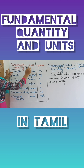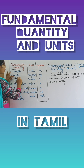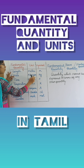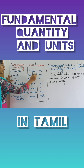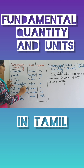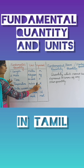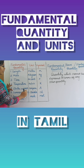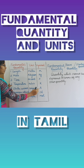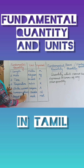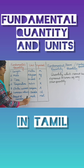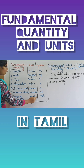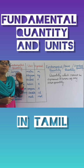Length has unit meter, symbol M. Mass has unit kilogram, symbol kg. Time has unit second, symbol S. Temperature has unit Kelvin, symbol K. Electric current has unit ampere, symbol A. Luminous intensity has unit candela, symbol C. Amount of substance has unit mole, symbol M. These are the fundamental quantities and their units.